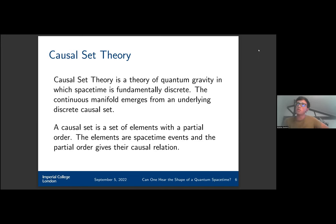To make our job a bit easier, we use the framework of causal set theory, which is a theory of quantum gravity in which spacetime is fundamentally discrete. The continuous manifold we are used to emerges from an underlying discrete causal set. This causal set is a set of elements with a partial order. Each element represents a spacetime event, and the partial order gives us the causal relation. With this structure and a length scale, one can completely describe a spacetime.